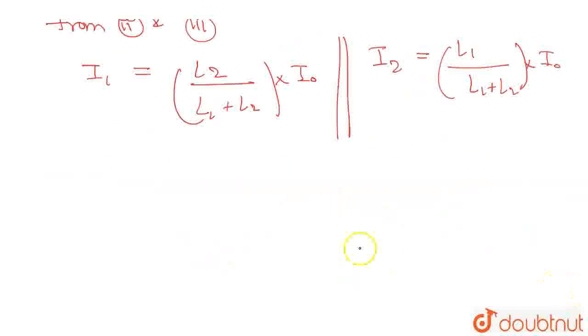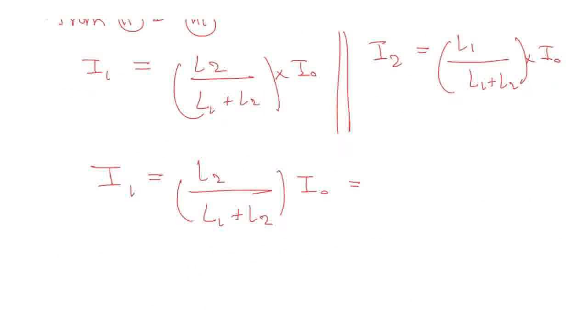So, now, the current through L1, that is clearly this I1. So, I1 we will simplify it. This will be equal to L2 divided by L1 plus L2 times I0. I0, we will define it as I0. So, this will be equals to L2 divided by L1 plus L2 times V0 divided by R. This is from use of equation 1. This is our required answer.